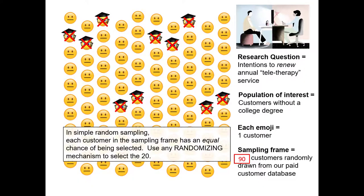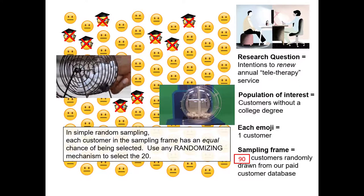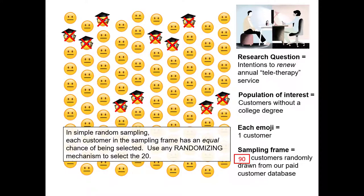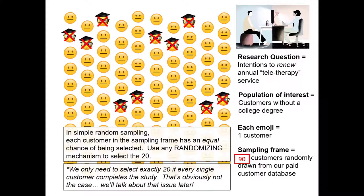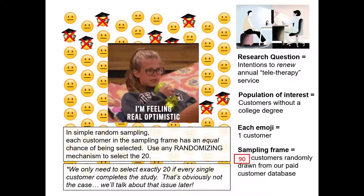In simple random sampling, each customer remaining in the sampling frame has an equal chance of being selected. At this point, we use any fair randomizing mechanism to select the 20. We could use something like bingo balls or a lottery drawing tool, but typically we use a computer algorithm to generate random IDs and select individuals that way. It should also be noted that we're assuming all 20 sampled individuals will agree to participate and complete the study. We'll talk in another video about how we determine how many people we really need to contact to reach a final sample size. For now, let's assume everyone selected will participate, so we just need to sample 20.